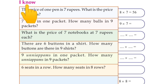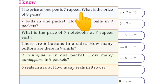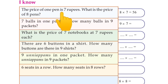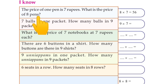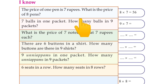The price of one pen is seven rupees. What is the price of eight pens? Eight times seven is equal to 56.